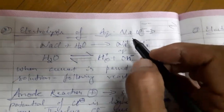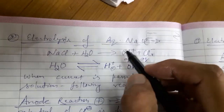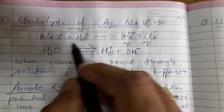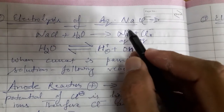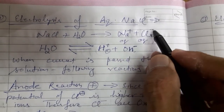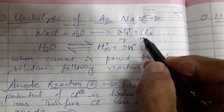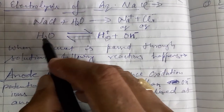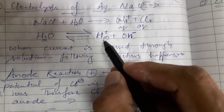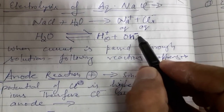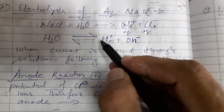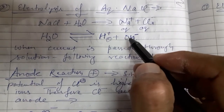Then comes electrolysis of aqueous NaCl — aqueous means NaCl dissolved in water. When NaCl is dissolved in water, it contains two types of ions: Na⁺(aq) and Cl⁻(aq). Together with these, water also contains two types of ions: H⁺ ions and OH⁻ ions. So in this solution there are two types of positive ions and two types of negative ions.